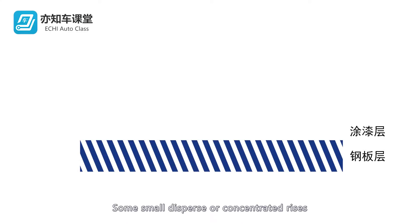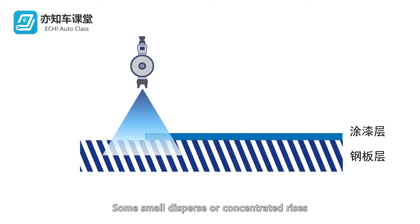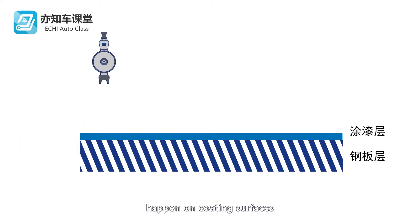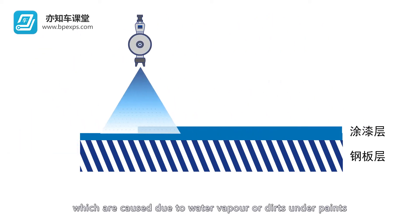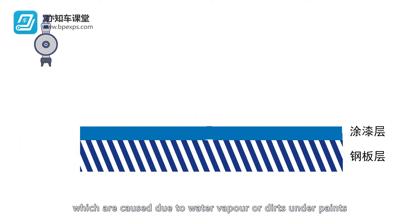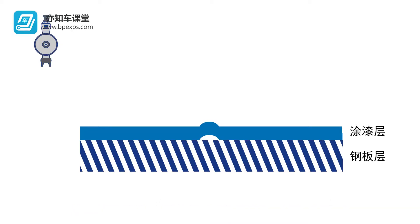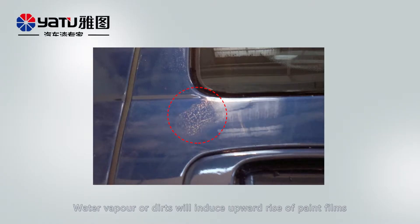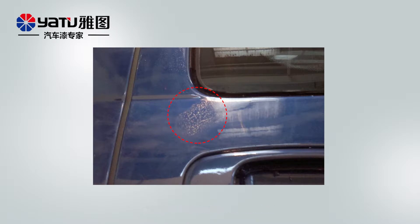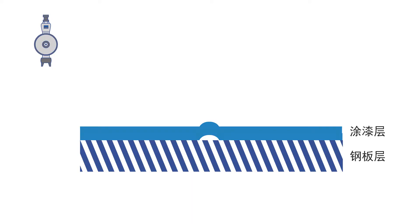Some small dispersed or concentrated rises happen on coating surfaces, which are caused due to water vapor and dirt under paint. Water vapor or dirt will induce upward rise of paint films after an automobile is used for a period of time in general.